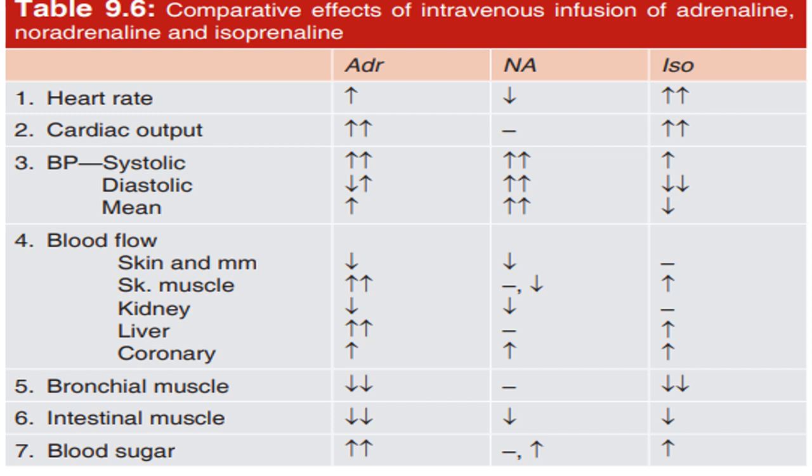Effect on various blood vessels: alpha-1, alpha-2, and beta-2 receptors are present. Alpha-1 and alpha-2 stimulation causes vasoconstriction; beta-2 stimulation causes vasodilation. Comparative effects of intravenous infusion of adrenaline, noradrenaline, and isoprenaline on heart rate: beta-1 receptors are present on the heart. Adrenaline and isoprenaline increase heart rate, but noradrenaline causes a reflex bradycardia.